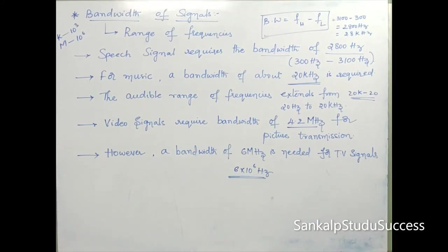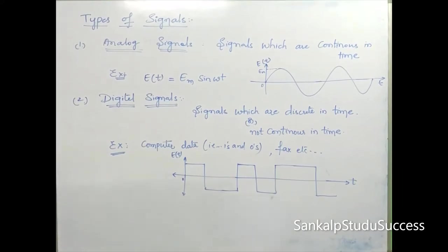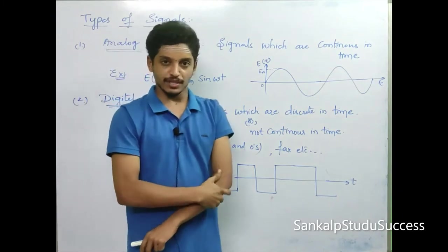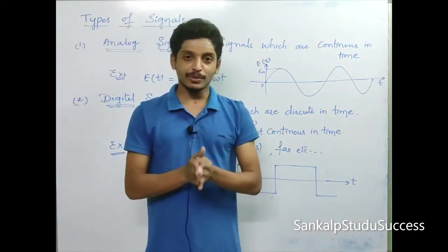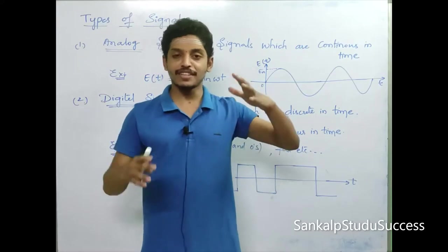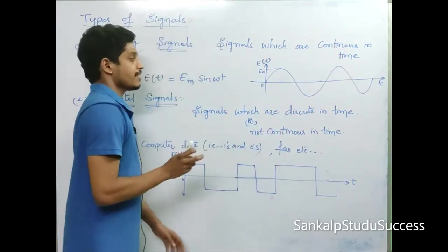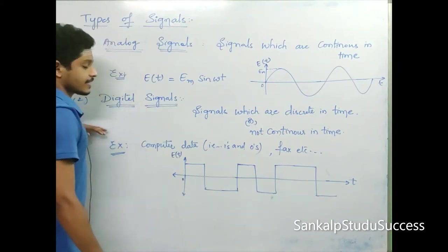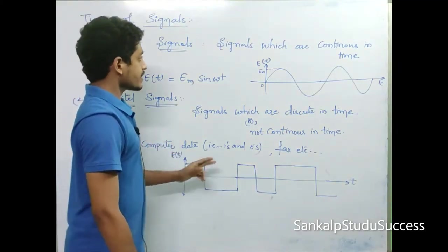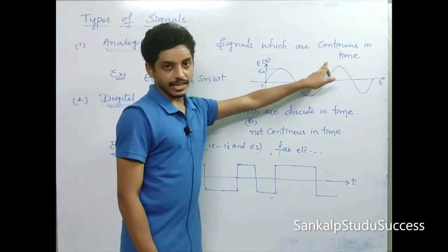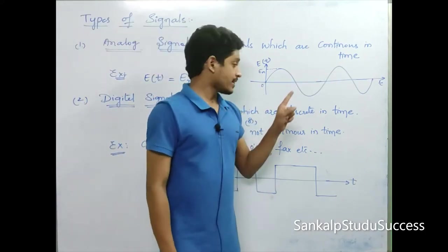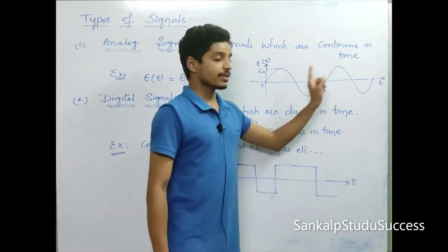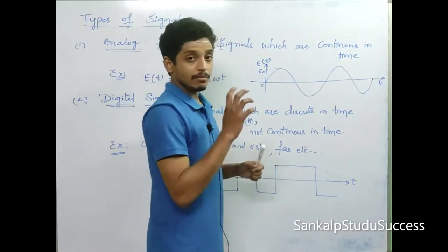Please note these values. Now look at the different types of signals. In general, we use two types of signals: analog signals and digital signals. Analog signals are continuous in time — in every time interval we have certain amplitude values. This type of signal is called an analog signal, also referred to as a continuous signal.